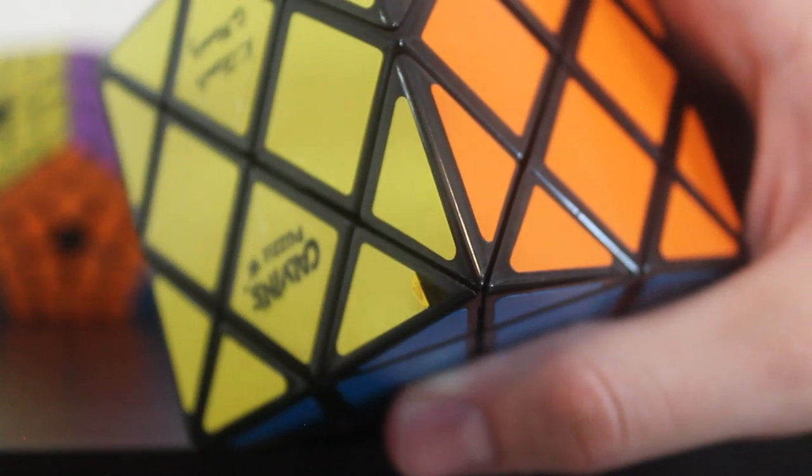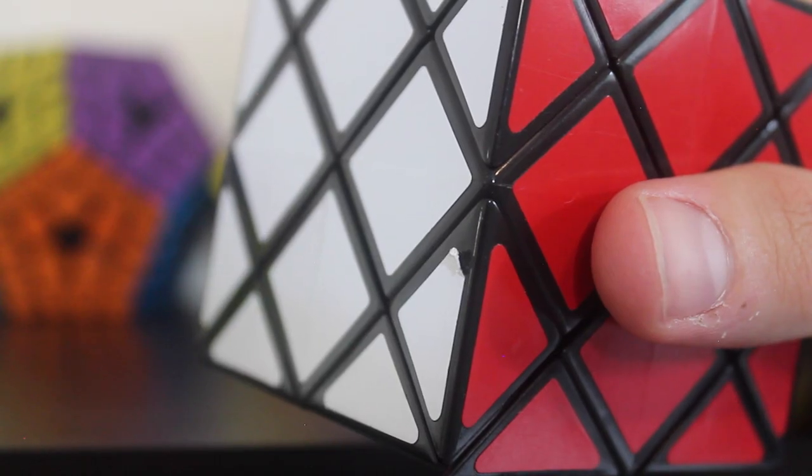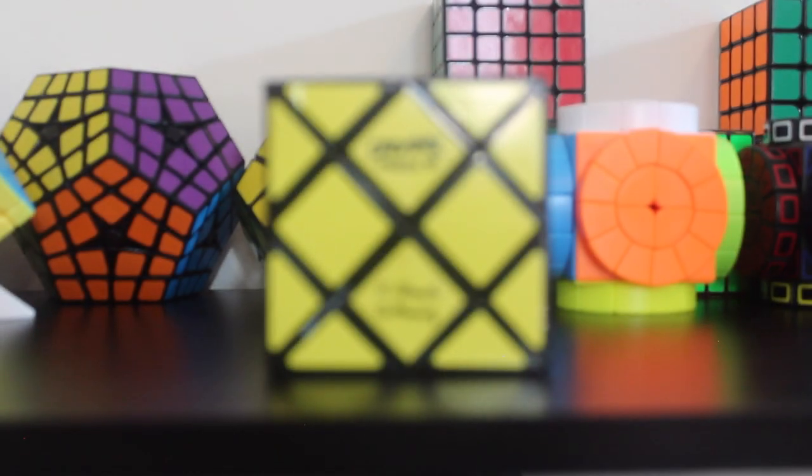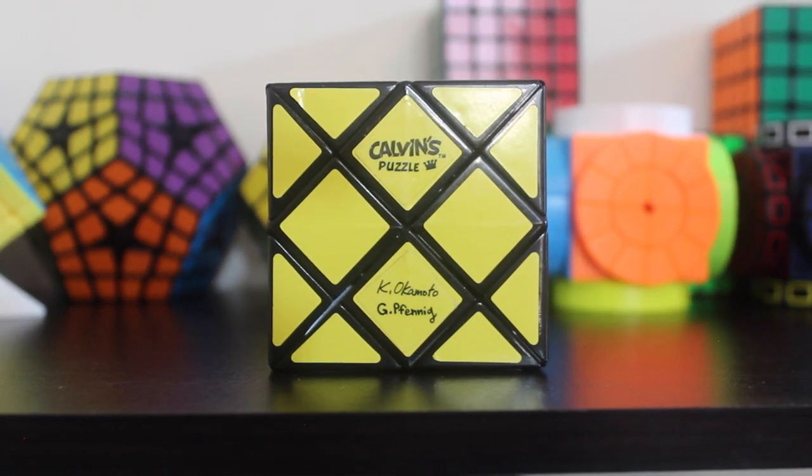Some of the smaller triangle stickers on the edges have started peeling, such as this yellow one and this white one. So now that this thing is scrambled, I'm going to go ahead and show you guys just the logos. Here you can see the Calvin puzzle logo, and then here you have the Okamoto and Fenning logos.